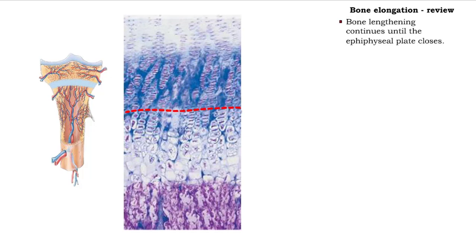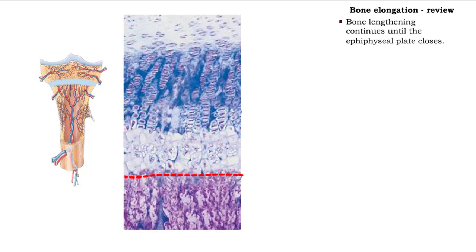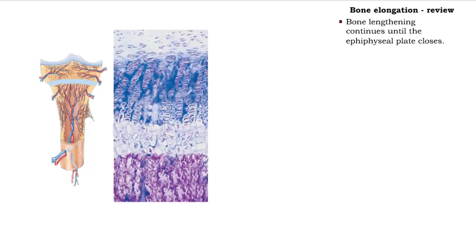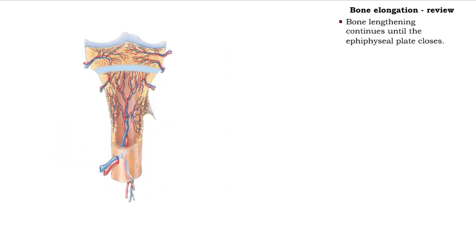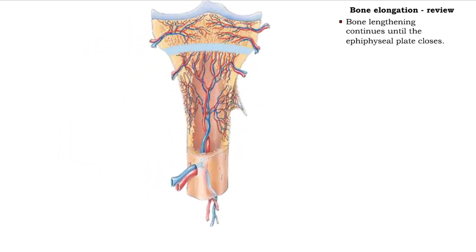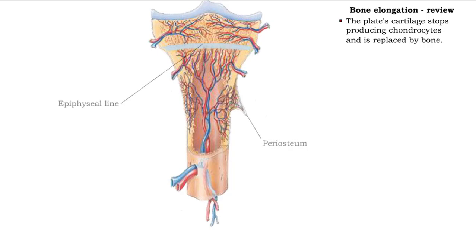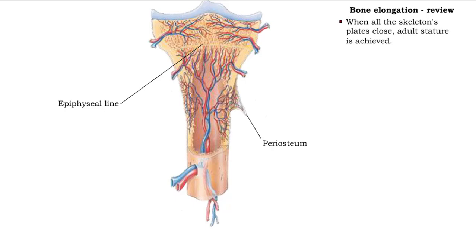This process of bone elongation continues until the epiphyseal plate closes, when cartilage cells in the plate stop proliferating. Bone replaces the cartilage, leaving an epiphyseal line. When this happens, adult stature is achieved.